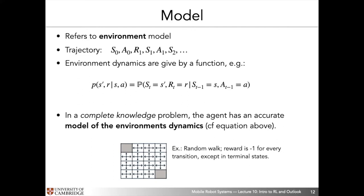As a concrete example, we can look at a random walk scenario assuming a complete knowledge problem where the agent and environment may share the same state. The model says we're following a random walk policy where the agent has an equal probability of moving into any adjacent cell in a grid. We know what the reward is for every transition — in this particular case equal to minus one, except for the terminal states. Given this model, we can go about solving a reinforcement learning policy that tries to maximize the sum of rewards.